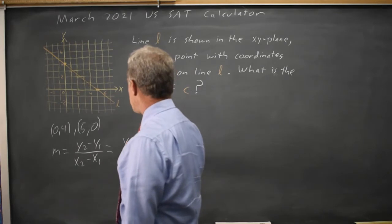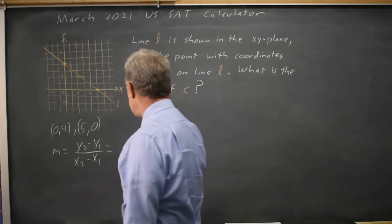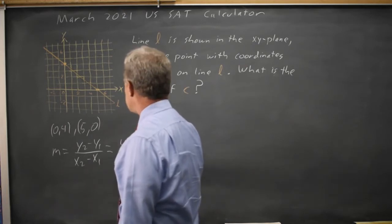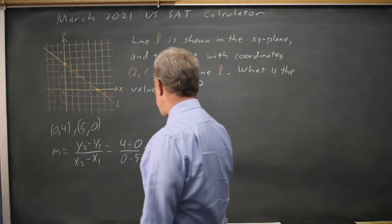The y's go 4 minus 0 as the x's go 0 minus 5. So that is negative 4 fifths or negative 0.8.